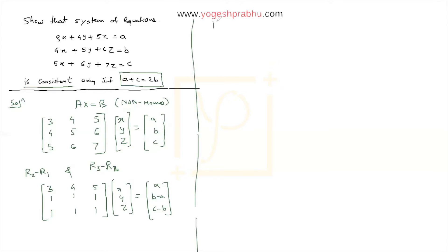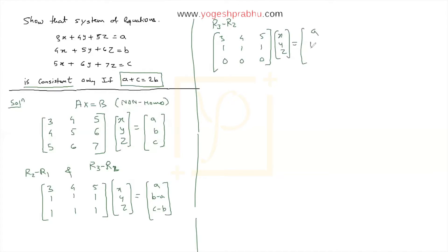We now perform R3 minus R2 again so the last row becomes all zeros. The matrix is: row 1 = [3, 4, 5], row 2 = [1, 1, 1], row 3 = [0, 0, 0]. The right-hand side becomes a, b−a, and c−b−(b−a) = c − 2b + a.